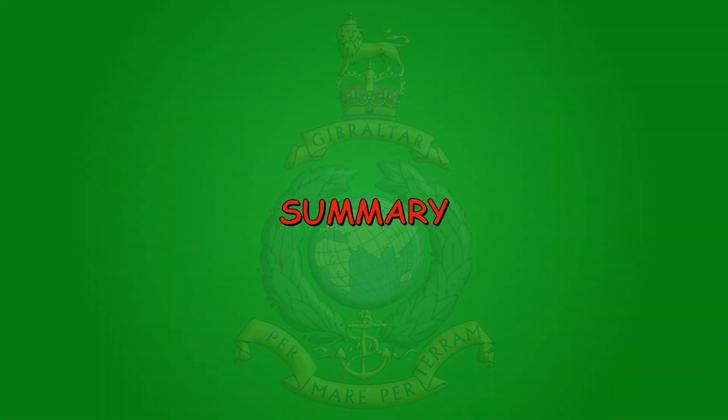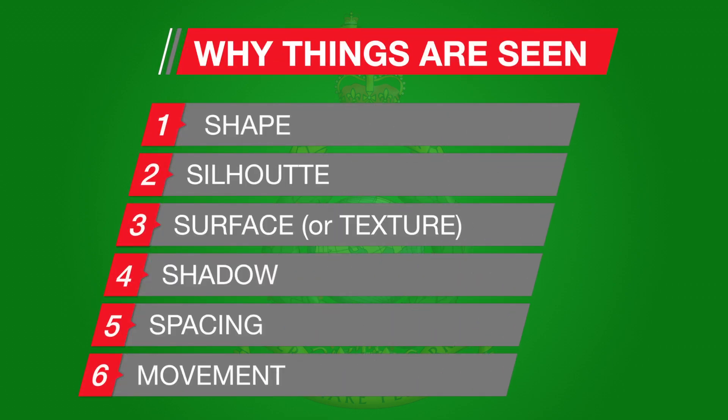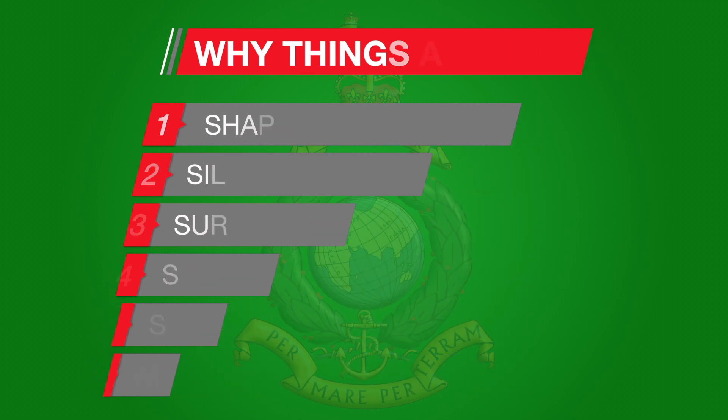So let's summarize. If you know how things are seen through those six factors - the five S's and one M - you can hide yourself, but also knowing those six factors should make it easier for you to find the enemy. Thanks very much.